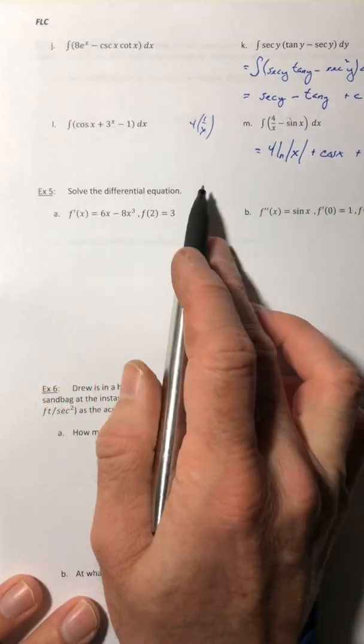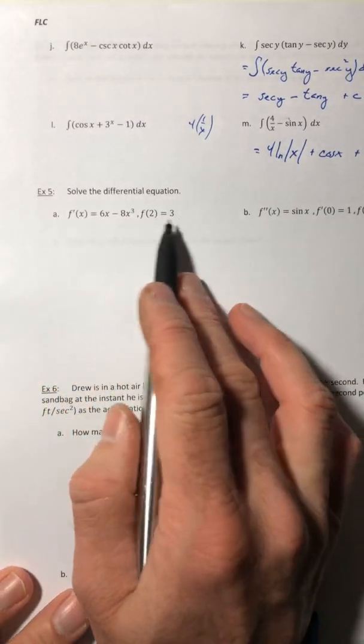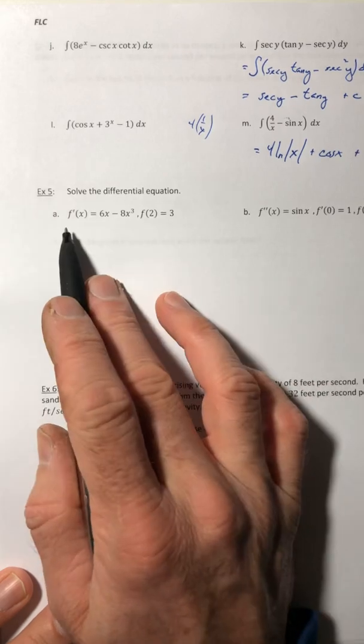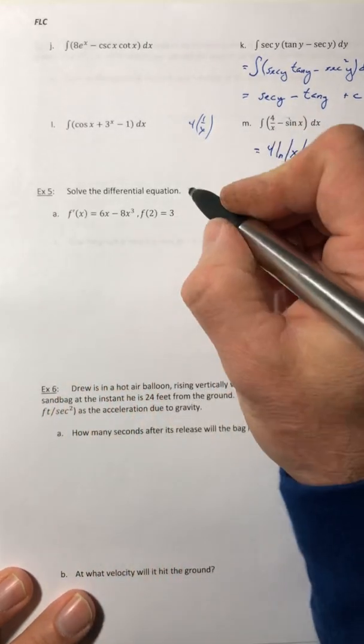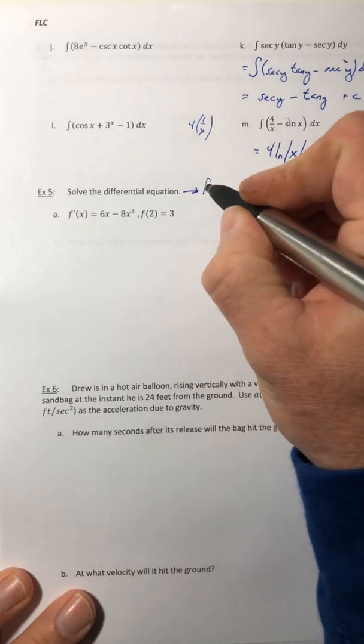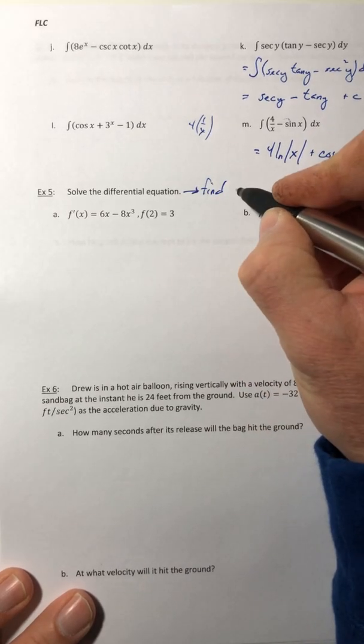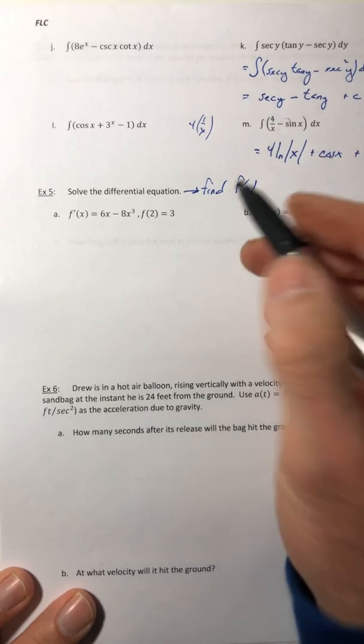Example 5. Solve the differential equation. So now it's written in a little bit different format here. So they're giving you the derivative and when it says solve the differential equation, in essence, they're saying, hey, find the original function. So like find f of x.